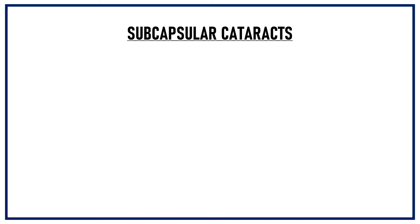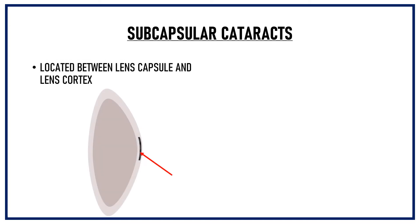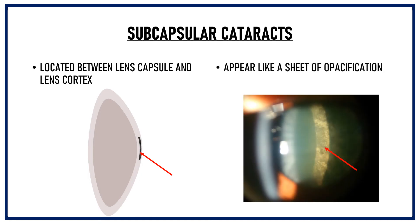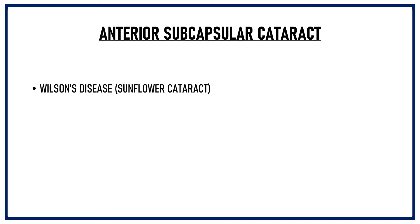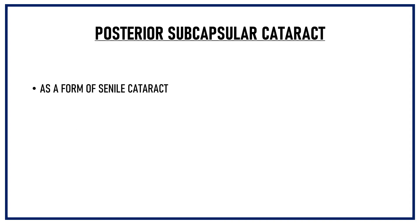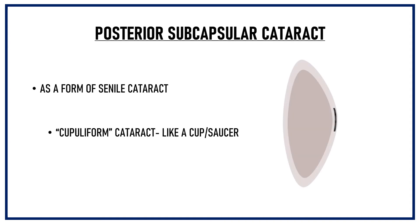Subcapsular cataracts are located between the lens capsule and the lens cortex. They appear like a sheet of opacification. Subcapsular cataracts can be anterior subcapsular or posterior subcapsular. Anterior subcapsular lens changes can occur in Wilson's disease, where it is known as the sunflower cataract. It can also occur as a side effect of drugs like amiodarone, which is used as an antiarrhythmic drug. Posterior subcapsular cataract can occur as a form of senile cataract where it is known as a cupuliform cataract — meaning shaped like a cup or a saucer — because of the shape it takes when it grows in the subcapsular region.